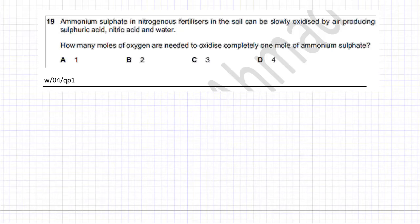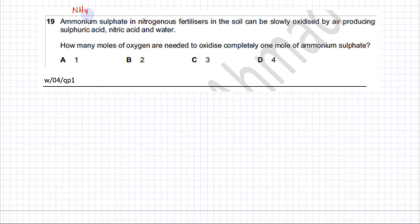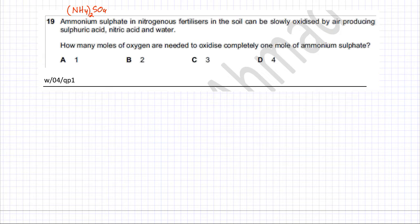The following question is about moles and balancing equations. The question involves ammonium sulfate, whose formula is (NH4)2SO4 — ammonium is NH4 with a +1 charge, and SO4 is 2 minus, so there are 2 ammonium ions. This is ammonium sulfate, a nitrogenous fertilizer that in soil can be slowly oxidized by air.